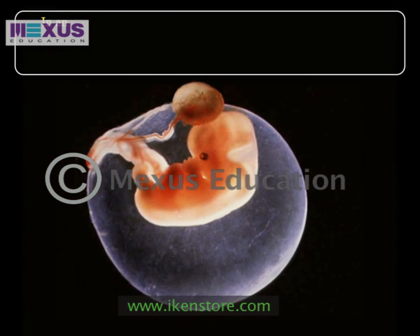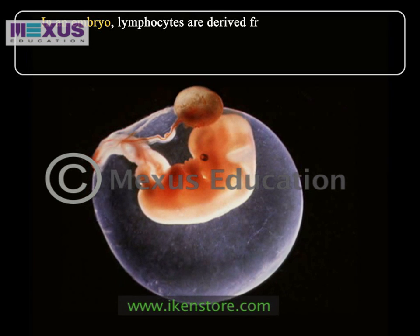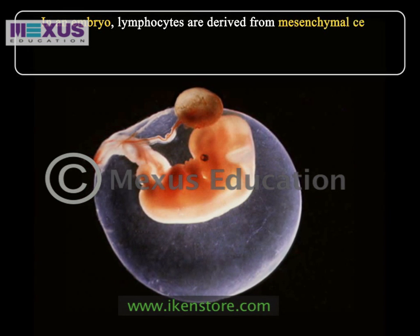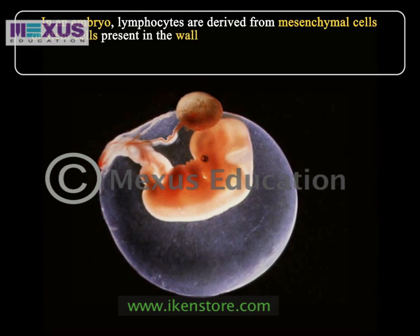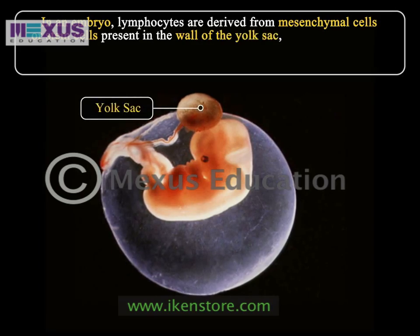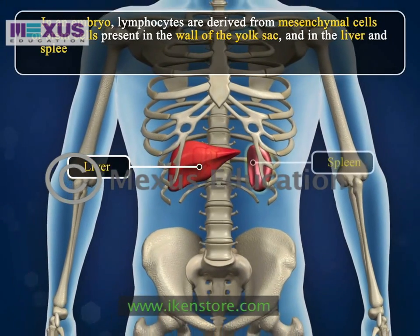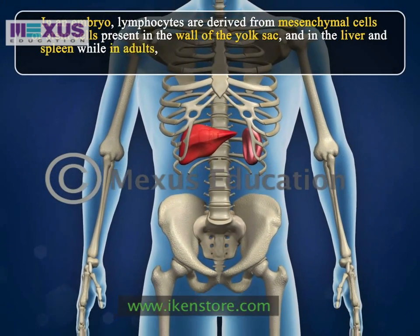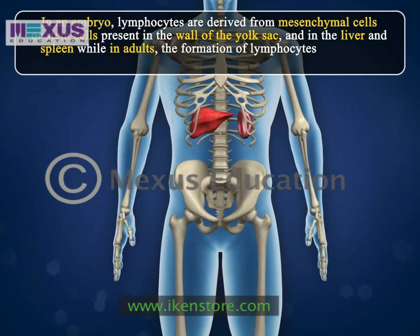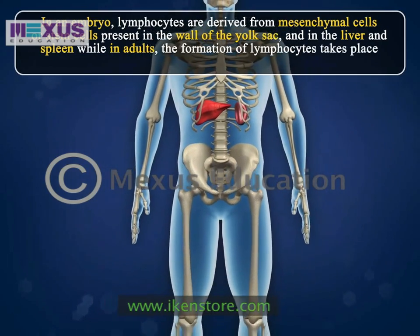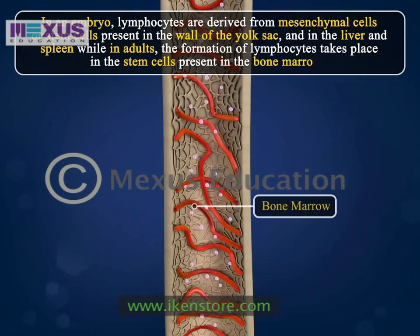In the embryo, lymphocytes are derived from mesenchymal cells or stem cells present in the wall of the yolk sac and in the liver and spleen. In adults, the formation of lymphocytes takes place in the stem cells present in the bone marrow.